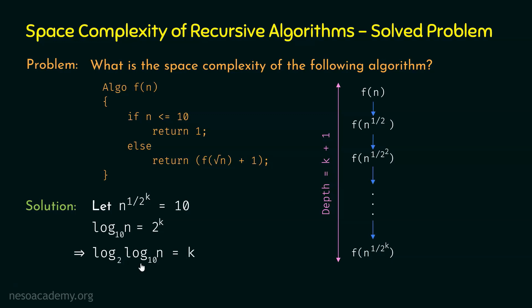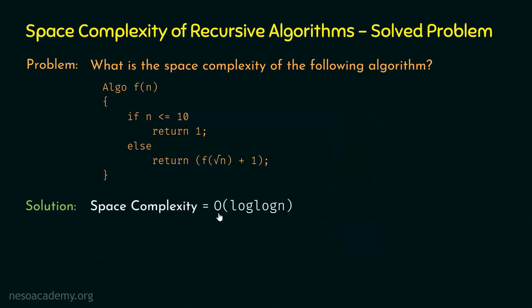We can replace k with this value. The depth of recursion is log log n + 1, so the space complexity is O(log log n) — this is the worst case space complexity. In the worst case, this algorithm takes O(log log n) space. In the best case, if n ≤ 10, the function is called only once, giving constant space, so the best case space complexity is Ω(1).